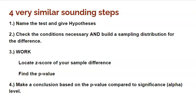But let's not forget the four steps to conduct a two-sample z-test. First, you have to name the test and give those hypotheses. Two, you've got to check all the conditions necessary. Three, you've got to do the work - finding your test statistic and your p-value, but that's exactly what I'm going to show you the calculator could do for you. And fourth, you've got to make sure to make your conclusion based on that p-value compared to your significance level.